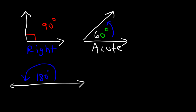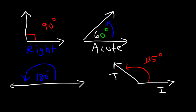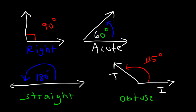An obtuse angle is greater than 90 degrees. For example, if the terminal side and the initial side form an angle of 135 degrees, that is an obtuse angle. And 180 degrees, as mentioned, is called a straight angle. Make sure you're familiar with these terms.